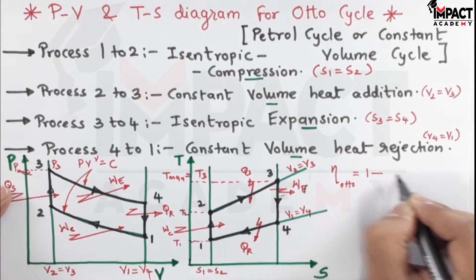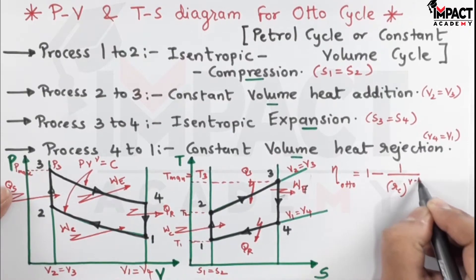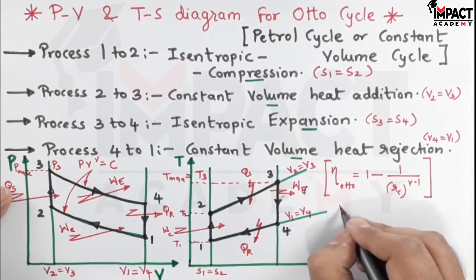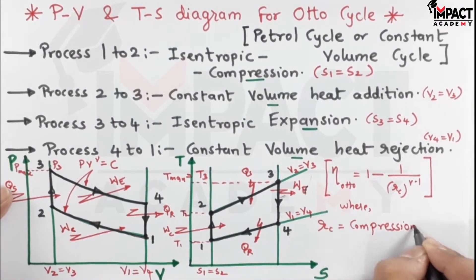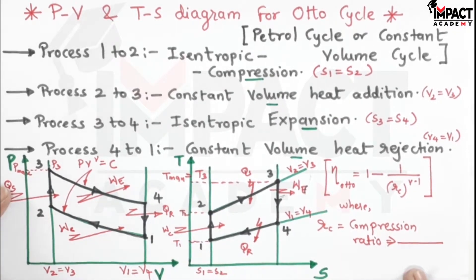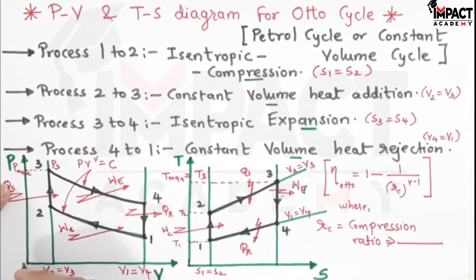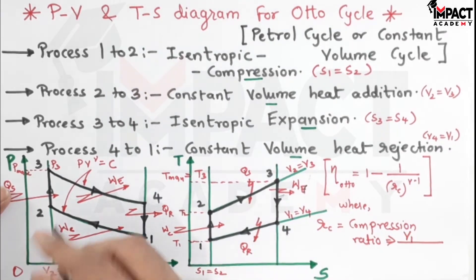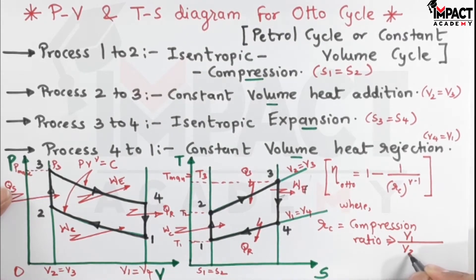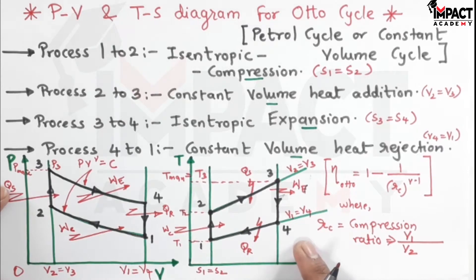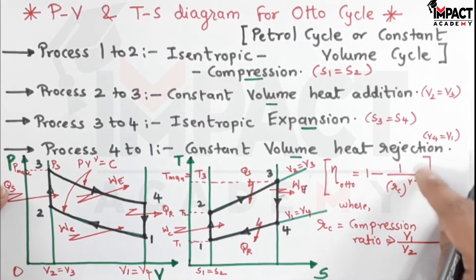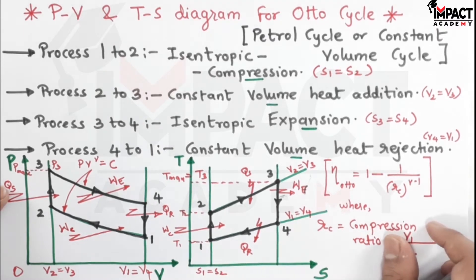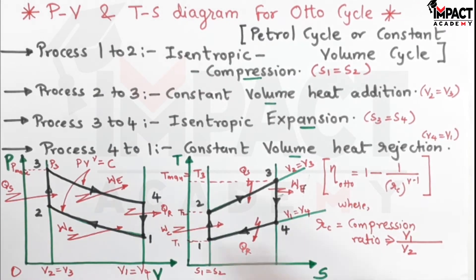The efficiency formula for the Otto Cycle is: eta equals 1 minus 1 divided by R_C raised to (gamma minus 1), where R_C is the compression ratio given by cylinder volume divided by clearance volume, that is V1 upon V2. To increase the efficiency of the Otto Cycle, we must increase the compression ratio — this decreases the fraction subtracted from 1, resulting in higher efficiency.